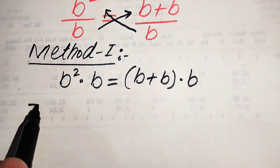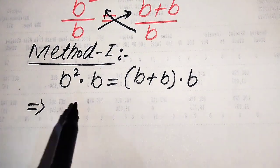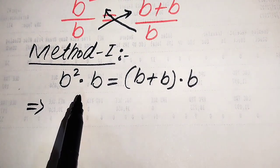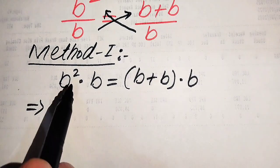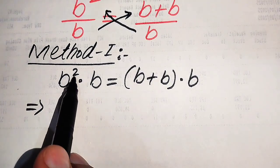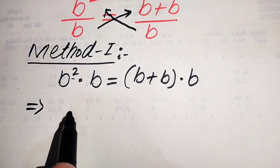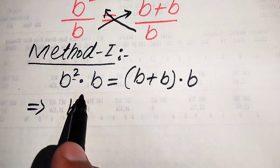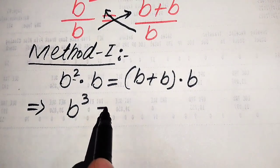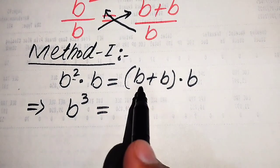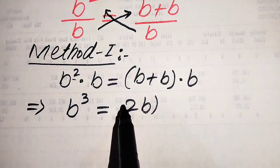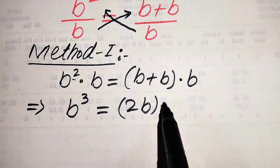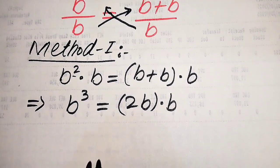In the next step, when two same variable terms are multiplied by each other, we add the exponents of these terms. The exponent of this is 2 and this is 1, so it becomes b cubed equals b plus b, which becomes 2b, multiplied by this b.